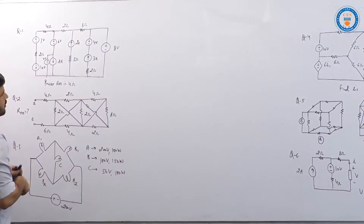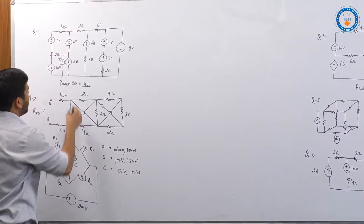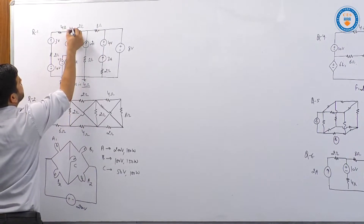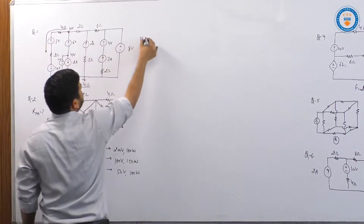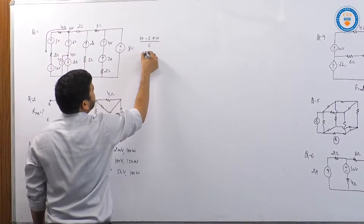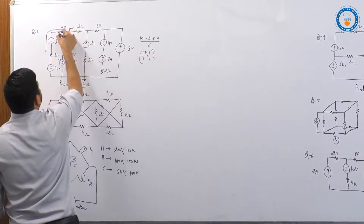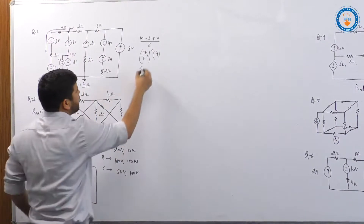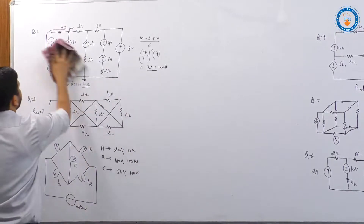First question: power loss in 4 ohms. We have 4 volts and 10 volts. The total current is 10 minus 3 plus 10 divided by 6, giving 17/6 amperes. Power is I² into R: (17/6)² into 4 ohms. My answer is 32.11 watts. It was an easy question.